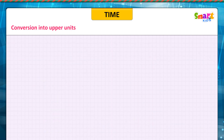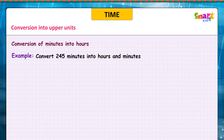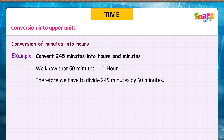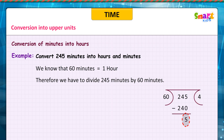Conversion into upper units. Conversion of minutes into hours. Example: convert 245 minutes into hours and minutes. We know that 60 minutes is equal to 1 hour. Therefore, we have to divide 245 minutes by 60. 245 divided by 60 goes 4 times with a remainder of 5. Therefore, 245 minutes is equal to 4 hours 5 minutes.